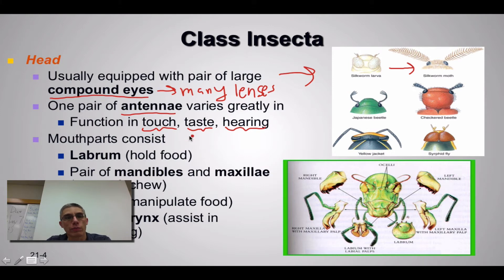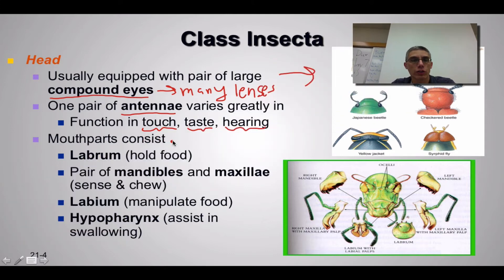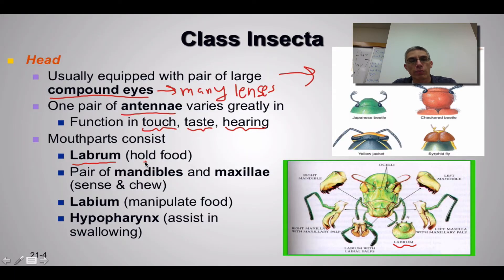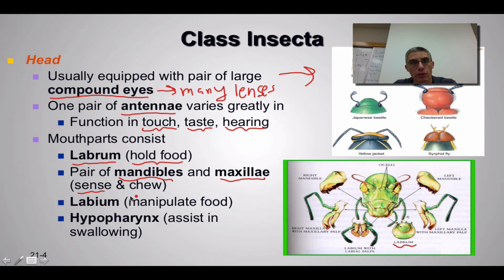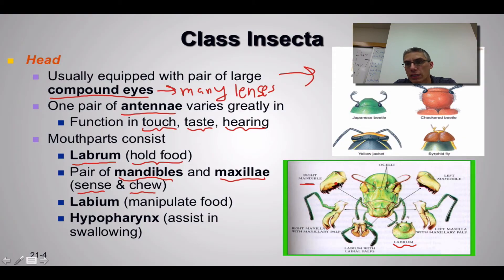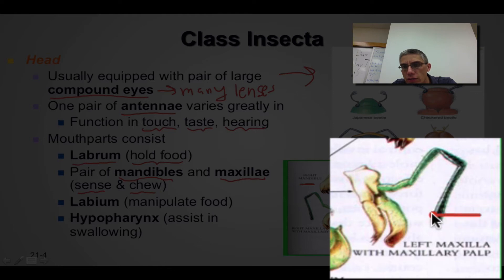In addition to the head varying, the mouth parts for these animals also vary because they have quite a variety of different feeding habits. However, there are standard parts found in all insects. The first is the labrum, which is primarily there to hold on to the food being consumed. Mandibles and maxilla function similarly to what we saw in crustaceans — the maxilla senses the environment and the type of food being consumed, while the mandibles, being very solid and hard, are there to chew up the food. You can see examples of the mandible and maxilla in the diagram, which look very similar to what you saw in the crayfish.